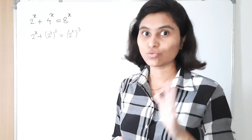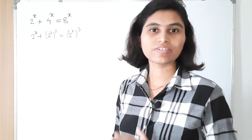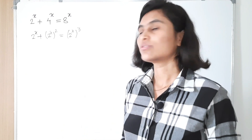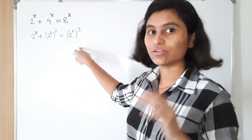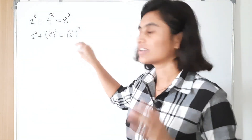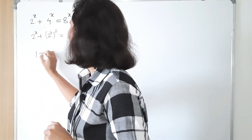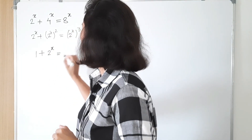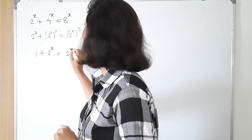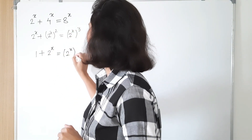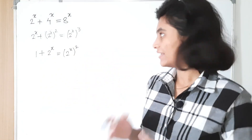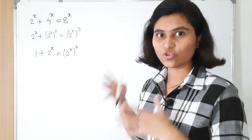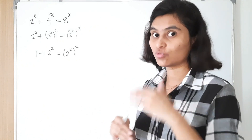Now for any value of x we know that 2 raised to x is always positive, which means it is not zero. So we divide throughout this equation by 2 raised to x, and we get 1 plus 2 raised to x is equal to 2 raised to x squared.